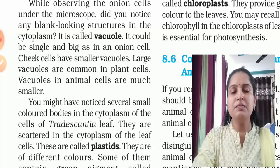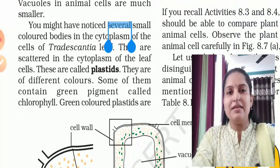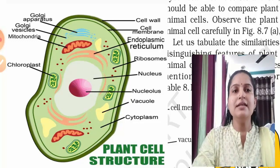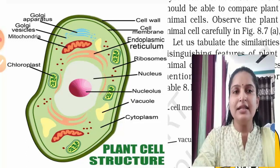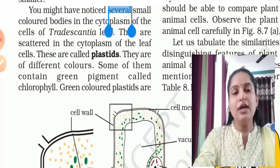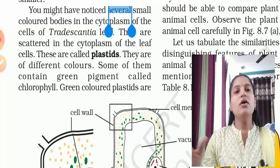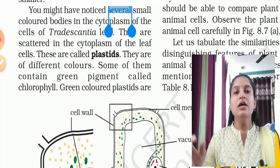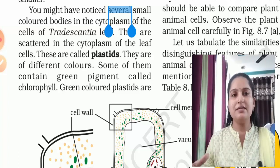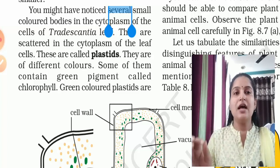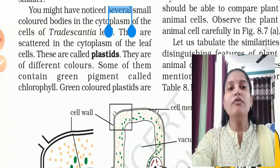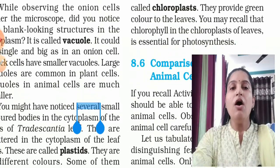You might have noticed several small colored bodies in the cytoplasm of cells of Tradescantia. These are scattered in the cytoplasm of leaf cells and are called plastids. Plastids can be different colors in different plants. Some contain a green pigment called chlorophyll. In plants, the green color we see in trees is because these plastids contain chlorophyll molecules. These are called chloroplasts.